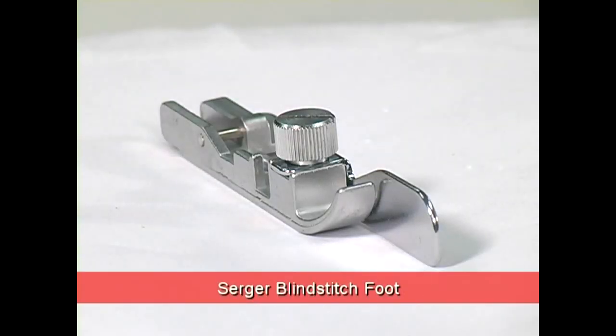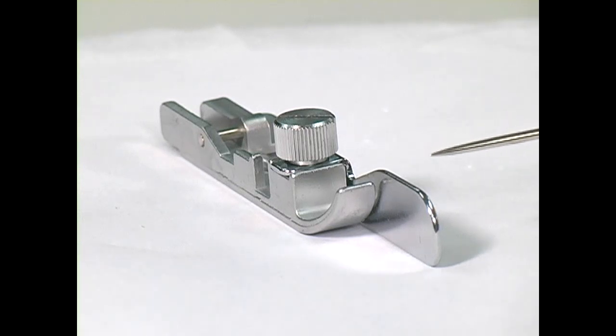The blind stitch foot is designed with an adjustable blade used as a guide to facilitate the stitching of serger blind hems. It's also useful for flat locking and heirloom techniques. Because the adjustable blade acts as a guide for feeding fabric under the needle, this foot can be helpful for beginners.